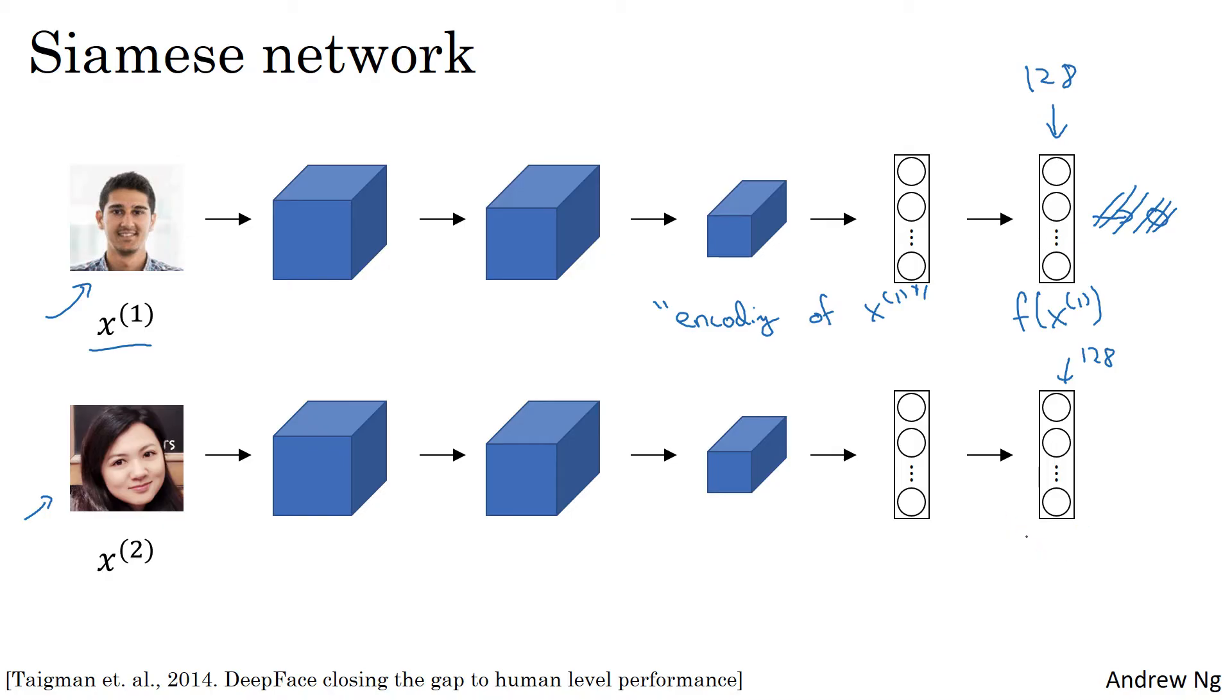I'm going to call this encoding of this second picture f of x2. And here I'm using x1 and x2 just to denote two input images. They don't necessarily have to be the first and second examples in your training sets. It can be any two pictures.